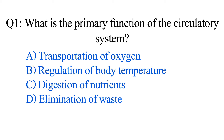Question number one. What is the primary function of the circulatory system? Option A: Transportation of oxygen. B: Regulation of body temperature. C: Digestion of nutrients. D: Elimination of waste. The correct option is Option A: Transportation of oxygen.